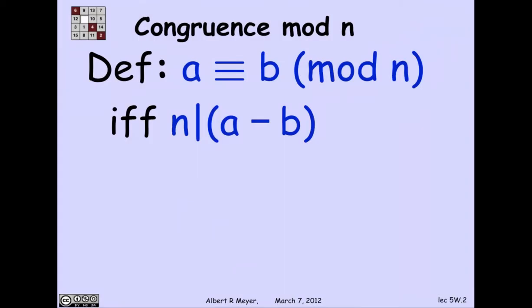Anyway, the definition of congruence is real simple. Congruence is a relation between two numbers, a and b. It's determined by another parameter, n, where n is considered to be greater than 1.